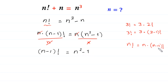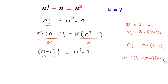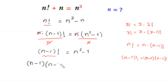Now, according to the factorial rule, (n minus 1) factorial is equal to (n minus 1) times (n minus 2) factorial. So we replace (n minus 1) factorial with (n minus 1) times (n minus 2) factorial.